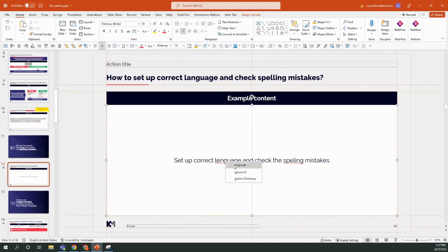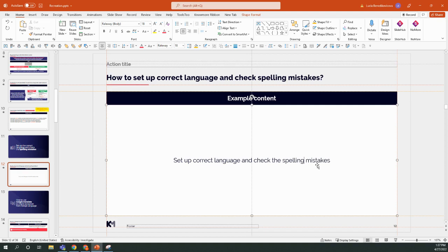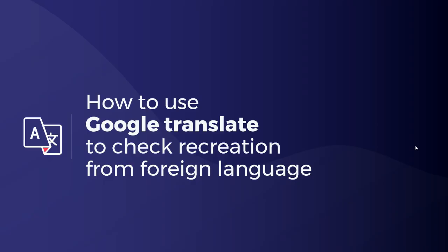Once the correct language is set, you can see all grammar and spelling mistakes underlined in red. You can simply correct these mistakes by right-clicking on the word and choosing the correct one. Make sure to double-check these words against the input, as this process helps you identify possibly correct words without mistakes.